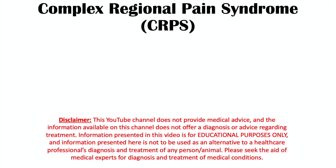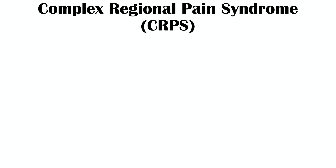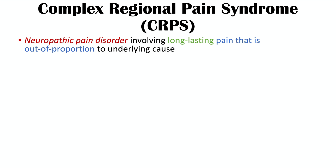Hi everyone, this lesson is on complex regional pain syndrome. We're going to talk about some risk factors for getting this condition, the pathophysiology behind why it occurs, the signs and symptoms, how it's diagnosed, and how it's treated. Complex regional pain syndrome is a neuropathic pain disorder involving long-lasting pain that is out of proportion to the underlying cause.